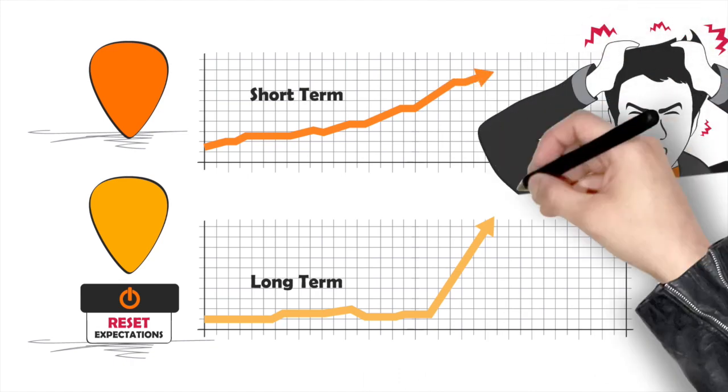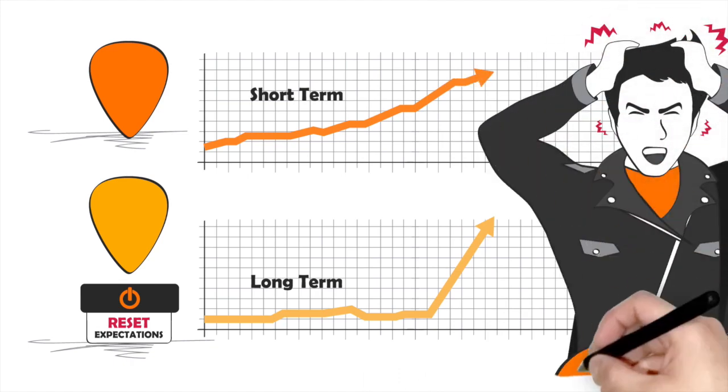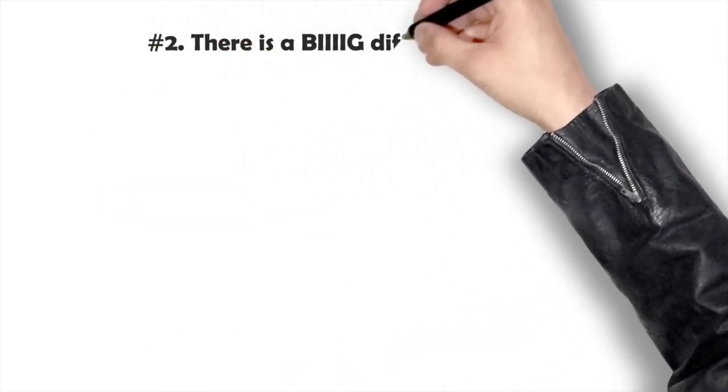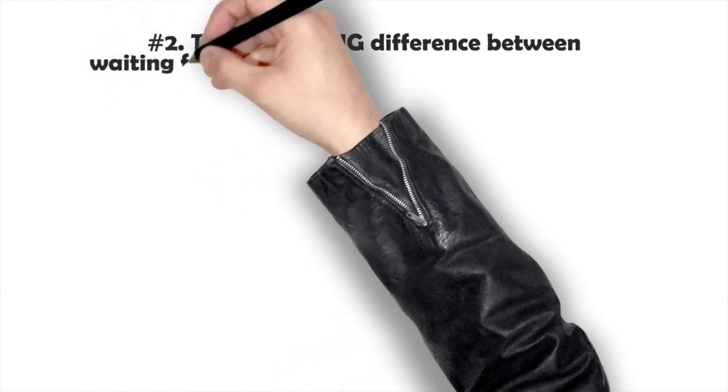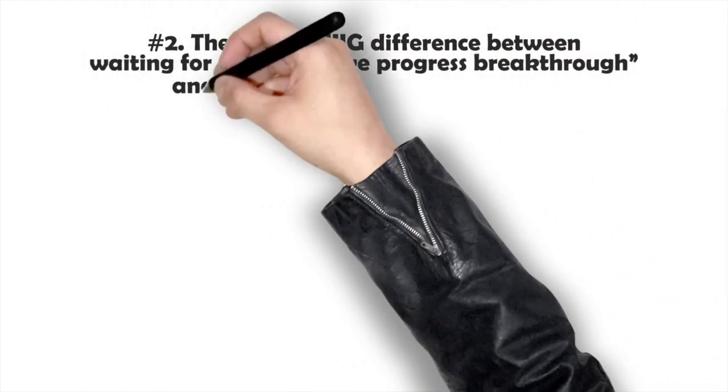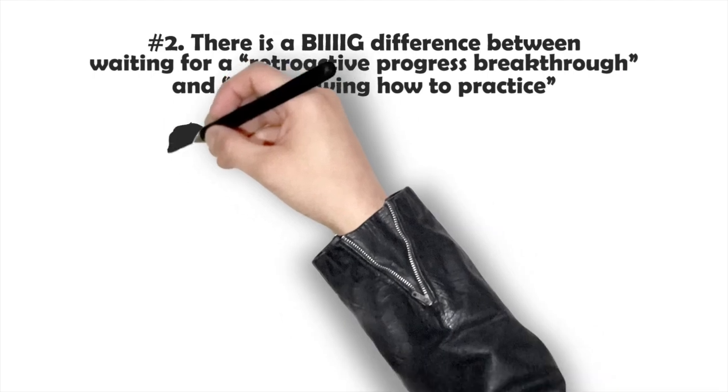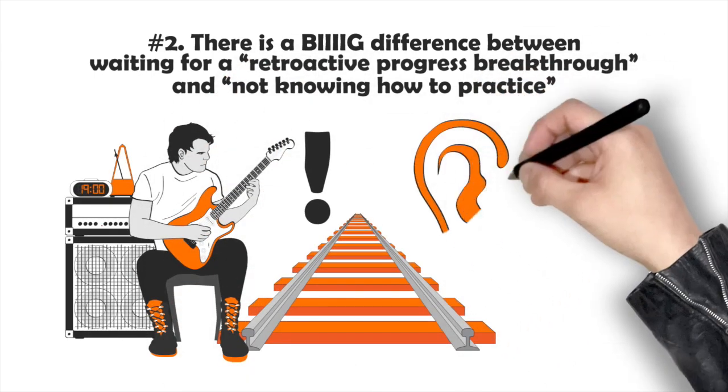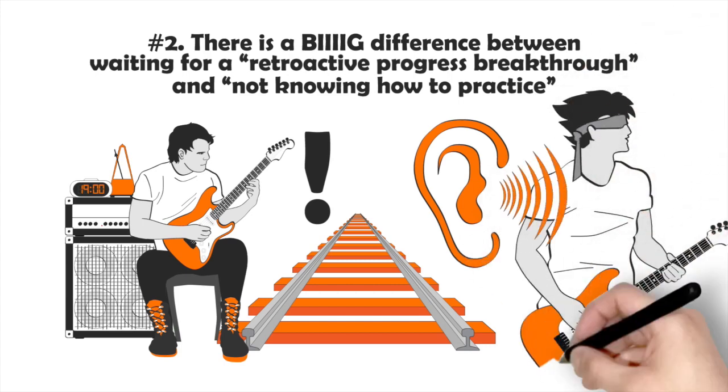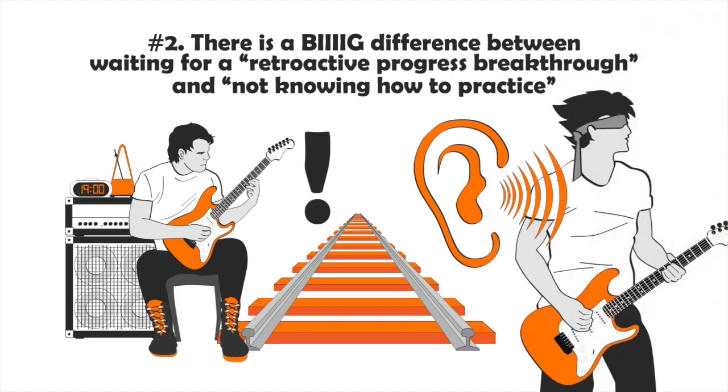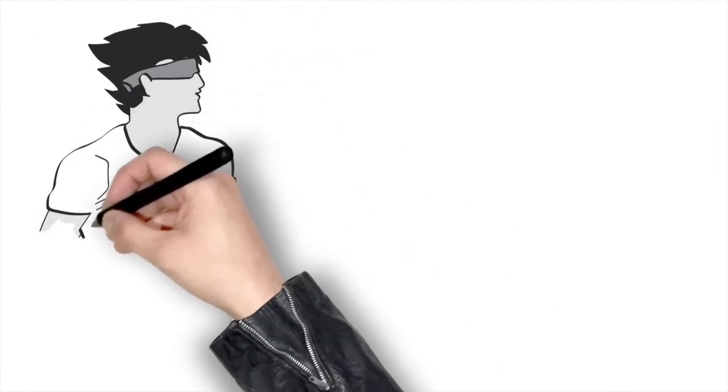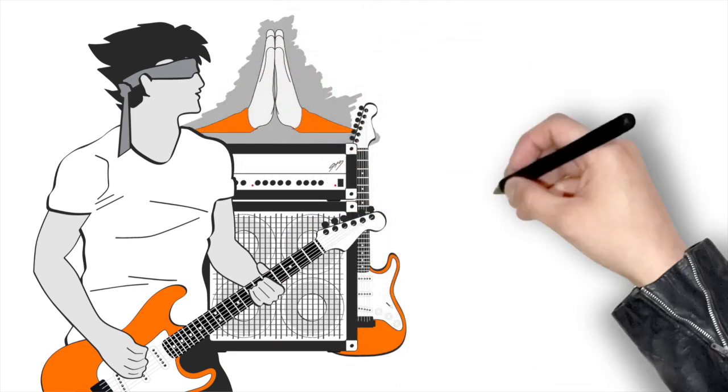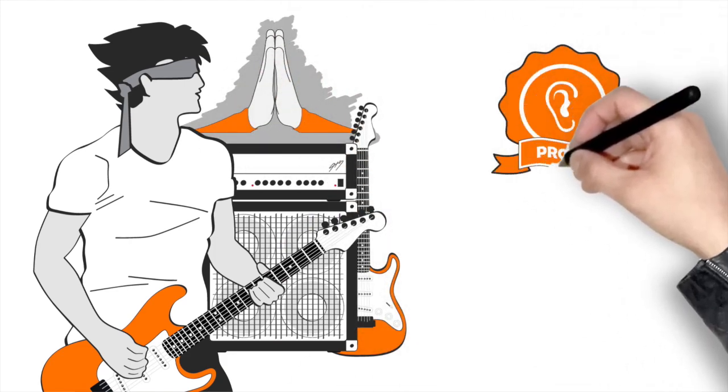Because if you don't reset your expectations, you're going to feel angry like Karl Marx on Wall Street because your playing doesn't improve right away. Second, there's a big difference between waiting for a retroactive progress breakthrough and not knowing how to practice guitar. The more you learn about practicing, the more certain you feel that you're on the right track in every practice session because even if you don't see earth-shattering results right away, you know you're moving towards your goal. When I was practicing ear training, the only certainty I had came from doing what my teachers told me to do. But I was acting mostly on faith. I had no proof that my hard work would ever pay off.